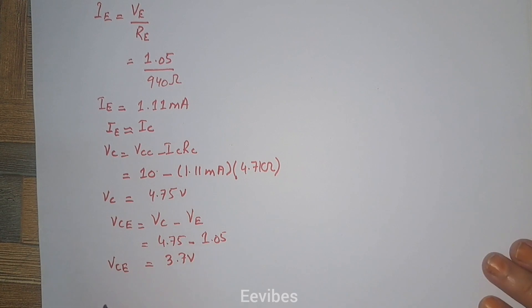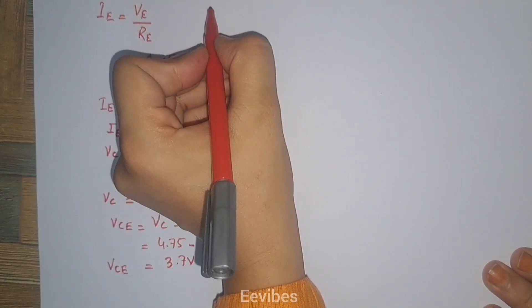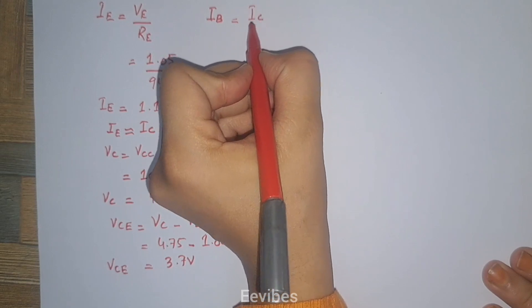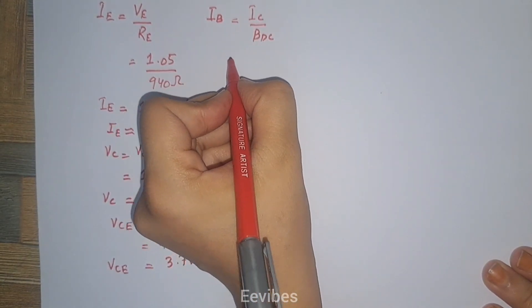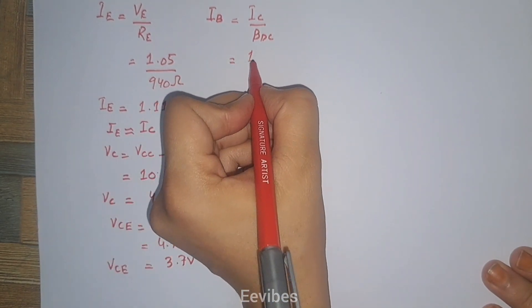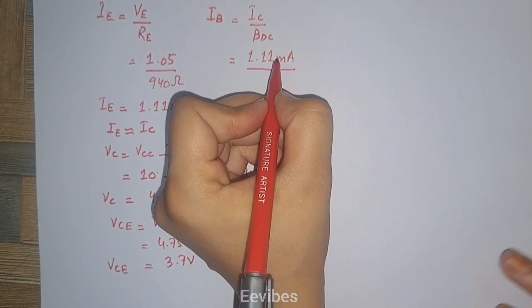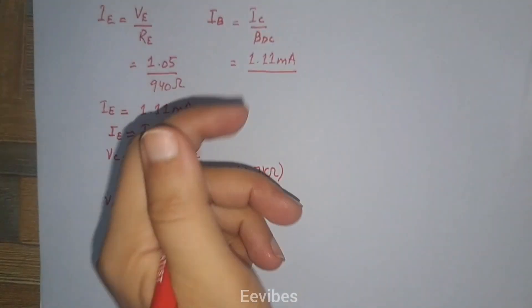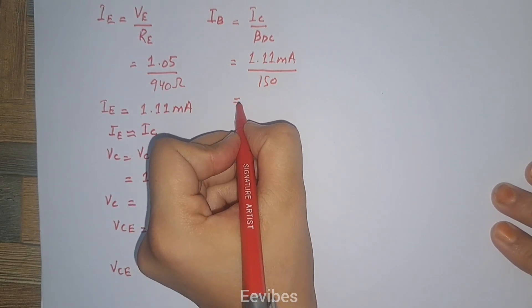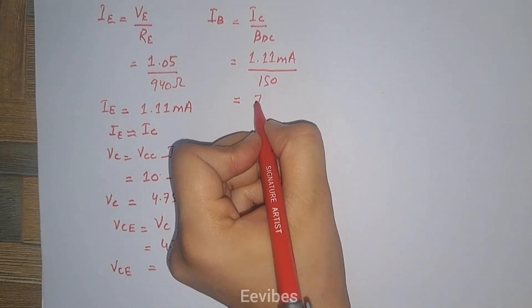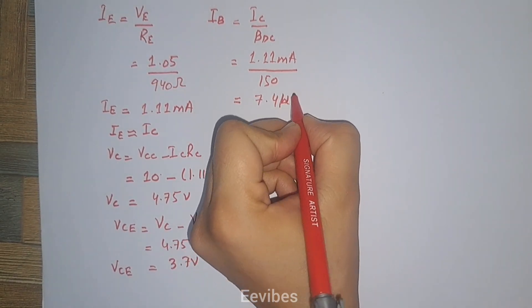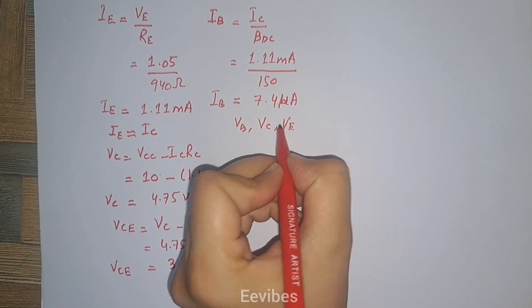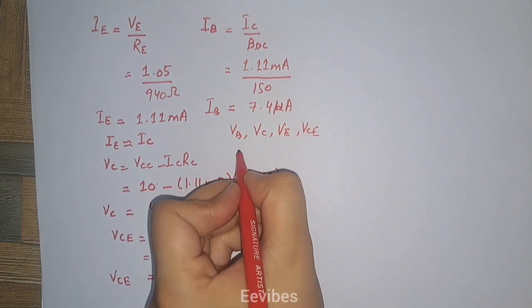The remaining current to determine is the base current IB. IB equals IC divided by beta_DC. Since the collector current was 1.11 milliamperes and beta_DC equals 150 (a dimensionless constant being a ratio of two currents), the base current comes out to 7.4 microamperes. This completes all DC parameters: VB, VC, VE, VCE, IC, IB, and IE.